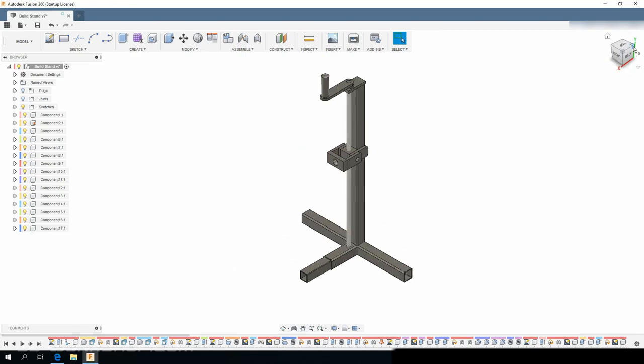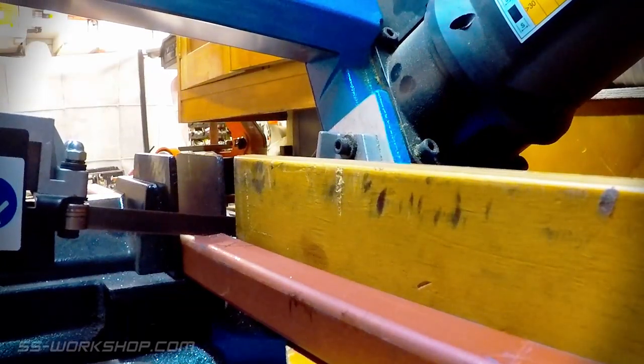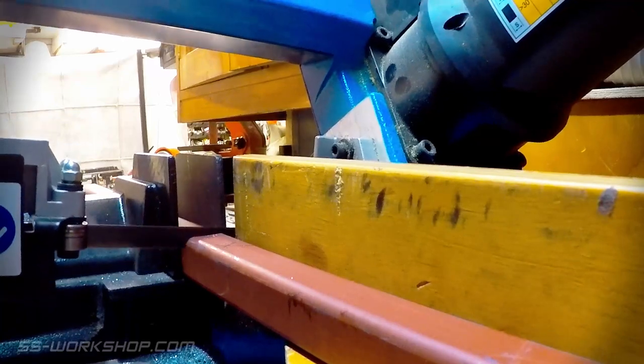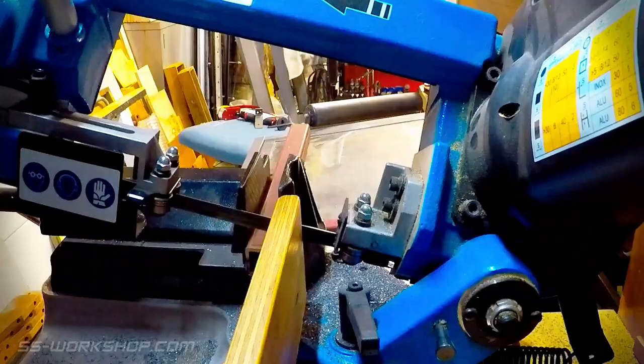Start work over at the bandsaw cutting 25 millimeter square hollow section. This will form all the frame members of the stand.